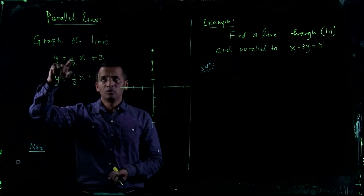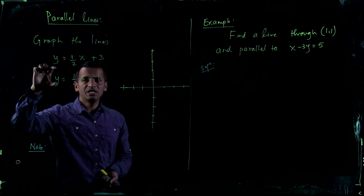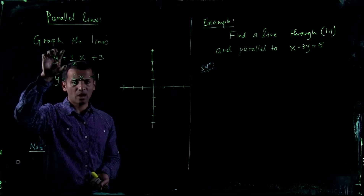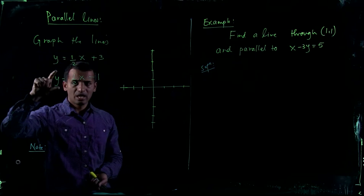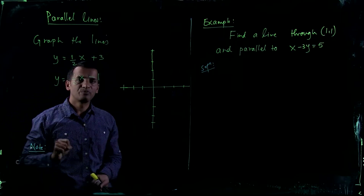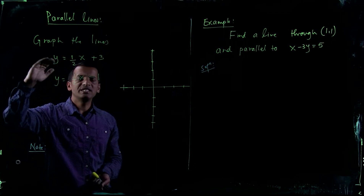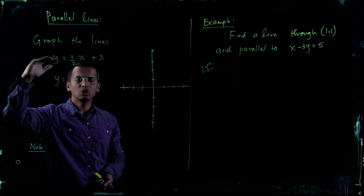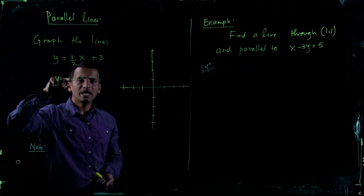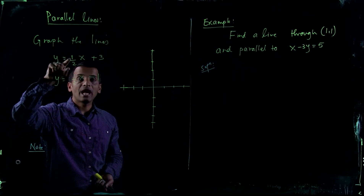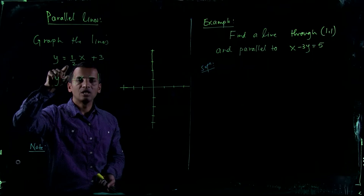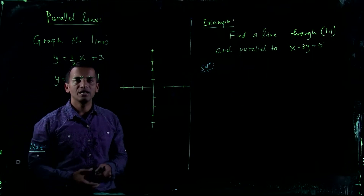First of all, let's see these two lines: y equals one-half x plus 3, and y equals one-half x minus 1. What is the same in these two lines? In both cases, the slope m is one-half and one-half. The slopes are equal.